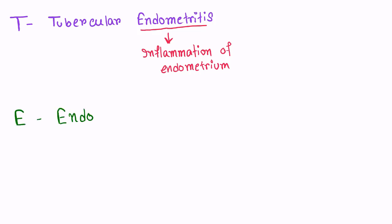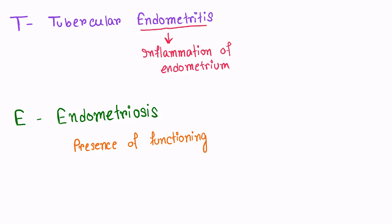E is for endometriosis. It is the presence of functioning endometrium in sites other than the uterine mucosa.